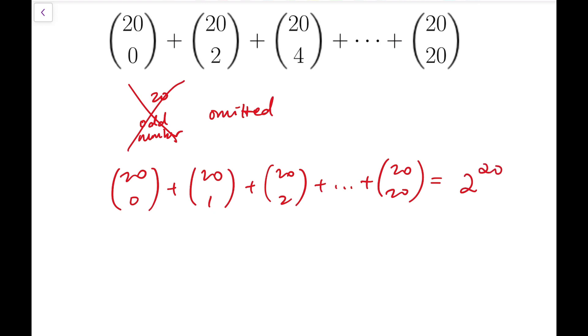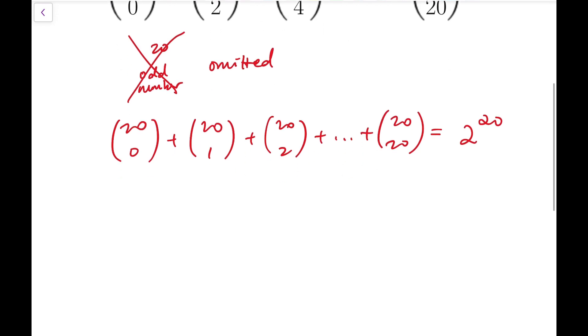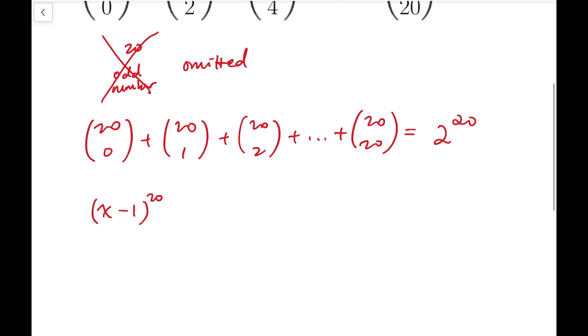So we need to subtract out the terms of the form 20 choose odd numbers. To do this, let's consider the expansion of x minus 1 all to the power 20 instead. And it turns out it's exactly turning the coefficients of odd powers to negative while the coefficients of even powers remain the same.